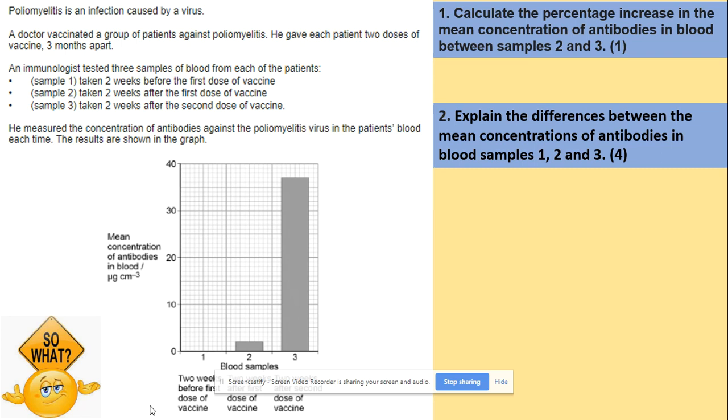You need to calculate the percentage increase in the mean concentration of antibodies in blood between samples 2 and 3. Really typical question, really typical skill looking at the percentage increase or decrease. We need to write down what the mean concentration is for those samples. We've got 37 here and we've got 2 over there. We need to look at the change over the original. They want the increase, so original is 2, times 100. We will have 35 divided by 2, that's 17.5 times 100, 1750 percent.